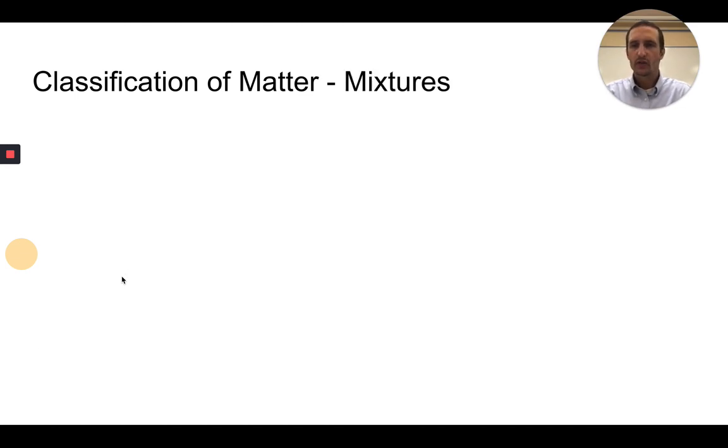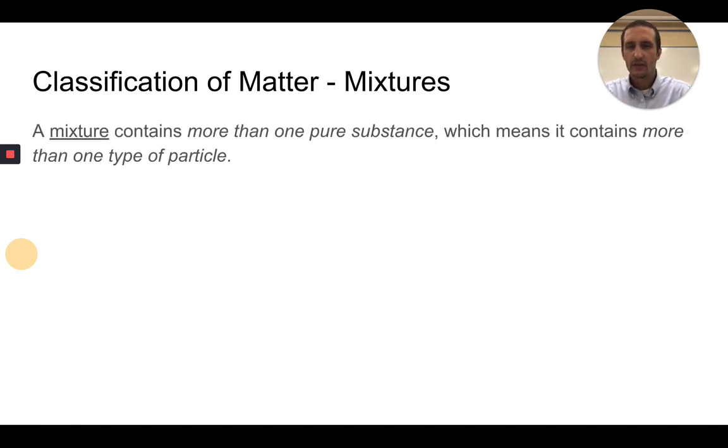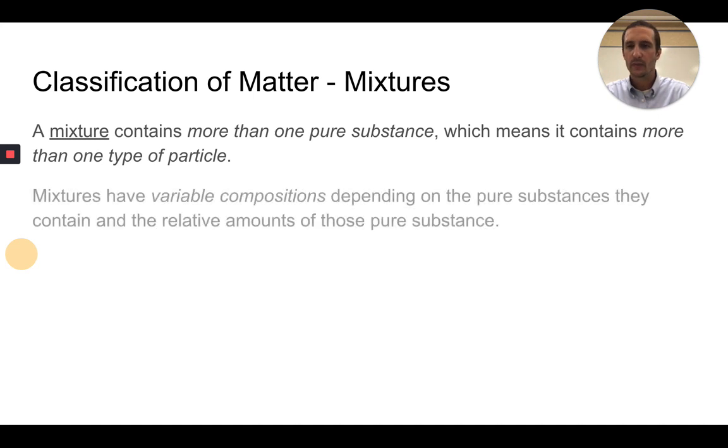Moving on to classification of matter, thinking about mixtures. A mixture contains more than one pure substance, which means there's more than one type of particle. Mixtures have variable composition depending on the pure substances they contain and their relative amounts.